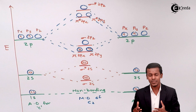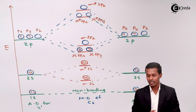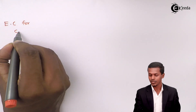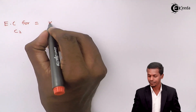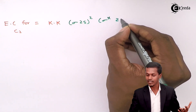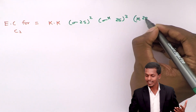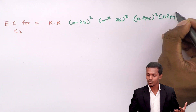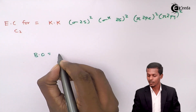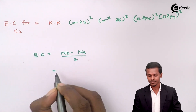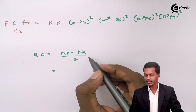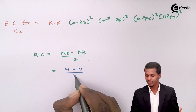Now let us write the electronic configuration for the carbon molecule C2. The non-bonding 1s orbitals are represented as KK. Then: sigma 2s with 2 electrons, sigma star 2s with 2 electrons, pi 2px with 2 electrons, and pi 2py with 2 electrons. For bond order — bond order = (nb − na) / 2. The number of electrons in bonding orbitals is 4 and in anti-bonding orbitals is 0, so bond order = (4 − 0) / 2 = 2.